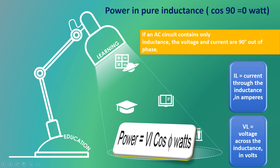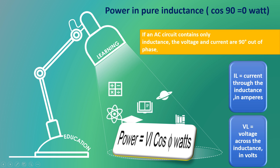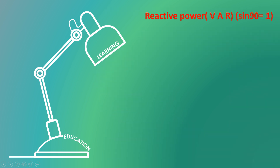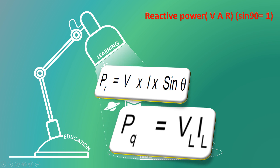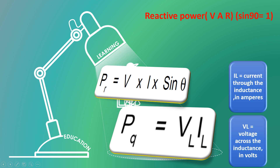IL means current through the inductance in ampere. VL means voltage across the inductance in volt. The formula to find the reactive power: reactive power equals to V into I sin theta, where theta equals to 90 degree, sin 90 degree equals to 1. Therefore, the formula becomes reactive power equals to VL into IL. Where IL means current through the inductance in ampere.